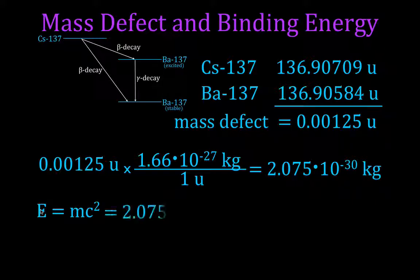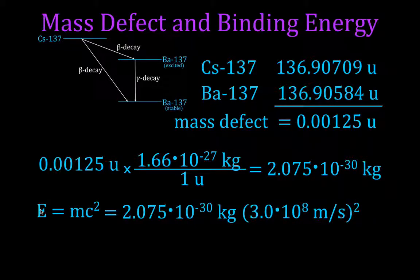Now we can take that mass in kilograms and put it in our equation. For Einstein's equation, E equals MC squared. Multiply that by the speed of light squared. And we get that the binding energy in joules is 1.87 times 10 to the minus 13 joules.